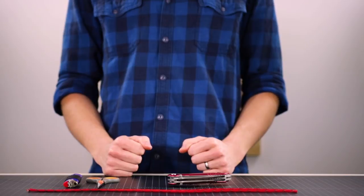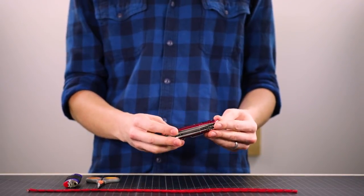Welcome back to another Paracord Planet tutorial. Today we're going to be making a knife fob or lanyard to put on this knife.